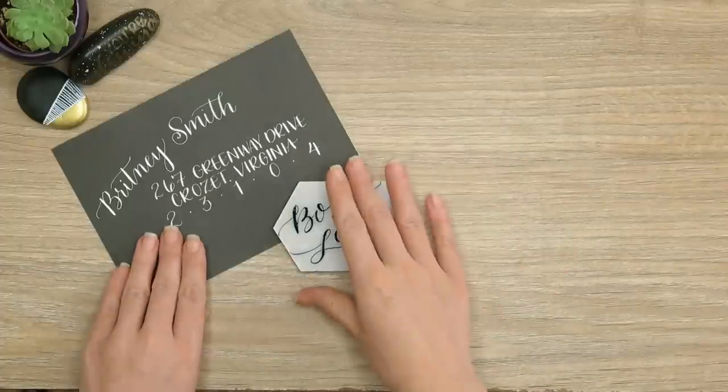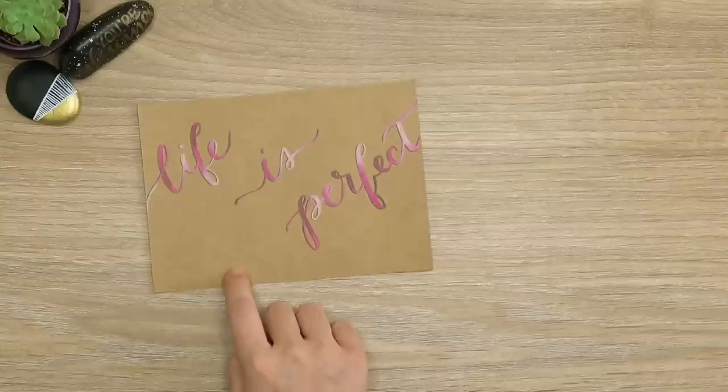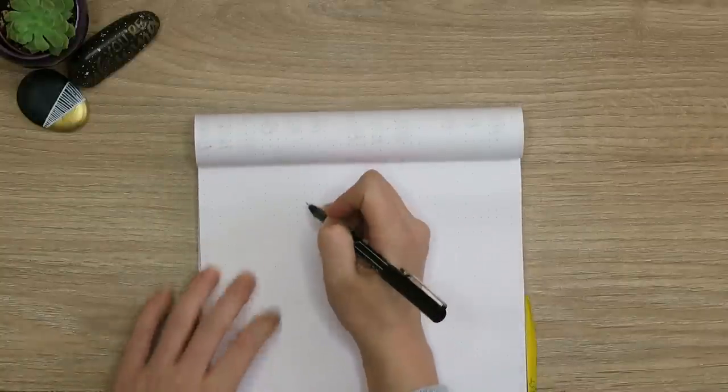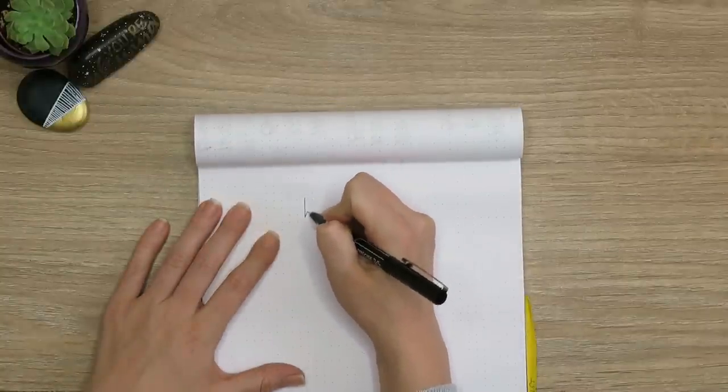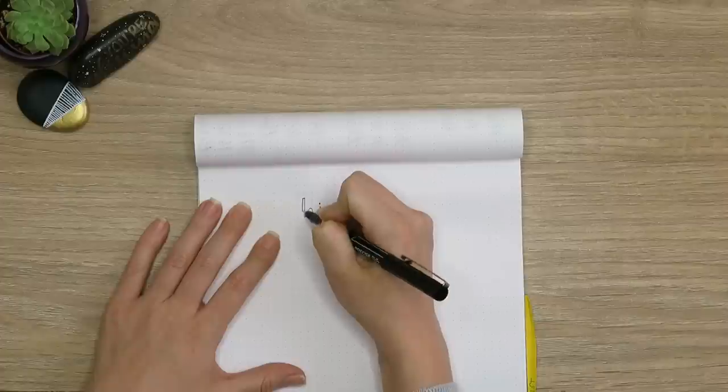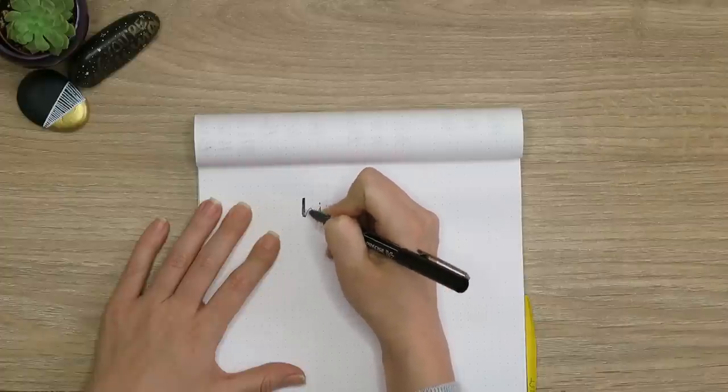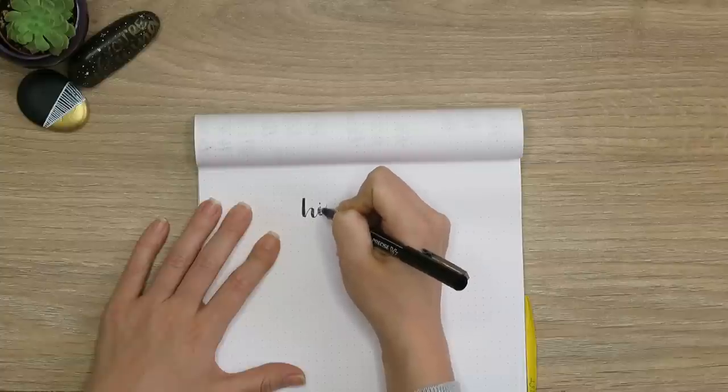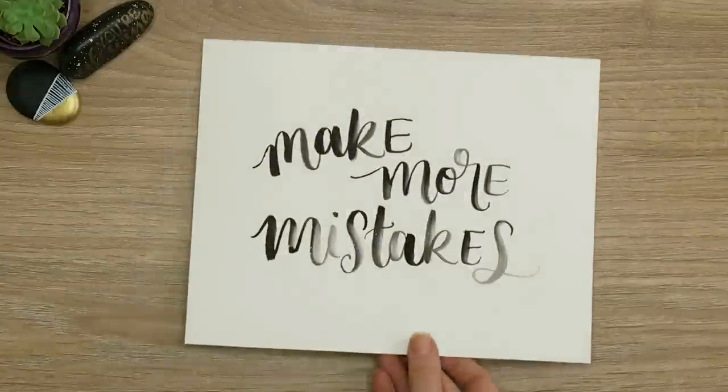If you want to learn faux calligraphy, I have more information on that in another video. The reason I'm not teaching it in this video is because it's a little bit simple. But here are the basics: you're going to draw whatever you want in whatever style of lettering you want—it can be your natural handwriting. Then you're going to thicken up the downstrokes. All you have to do is make the lines where your pen was moving towards the bottom of your paper thicker.